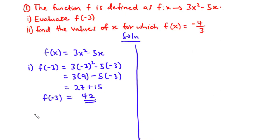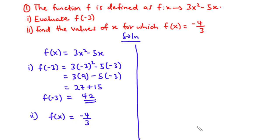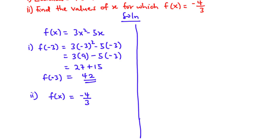Now let's solve part ii — we are going to find the values of x for which f(x) equals negative 4 over 3. We equate the function f(x), which is 3x squared minus 5x, to negative 4 over 3. So 3x squared minus 5x equals negative 4 over 3.